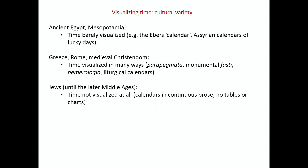What we've seen so far is considerable variety from one culture to the next. In ancient Mesopotamia and ancient Egypt, time is barely visualized — we saw things which are a little bit like a calendar, but they aren't really the equivalent of a full calendar. In Greece and Rome, in medieval Christendom, time is, by contrast, visualized in many ways: the parapigmata — the stone with the peg holes — the monumental fasti, the big Roman displayed calendars, the hemerologia, the tables of provincial calendars in the empire, and the liturgical calendars, which become very prominent in the Middle Ages. And then when you go to the Jews, again by contrast, time is not visualized at all — calendars are written out in continuous prose and there is no visual effect.